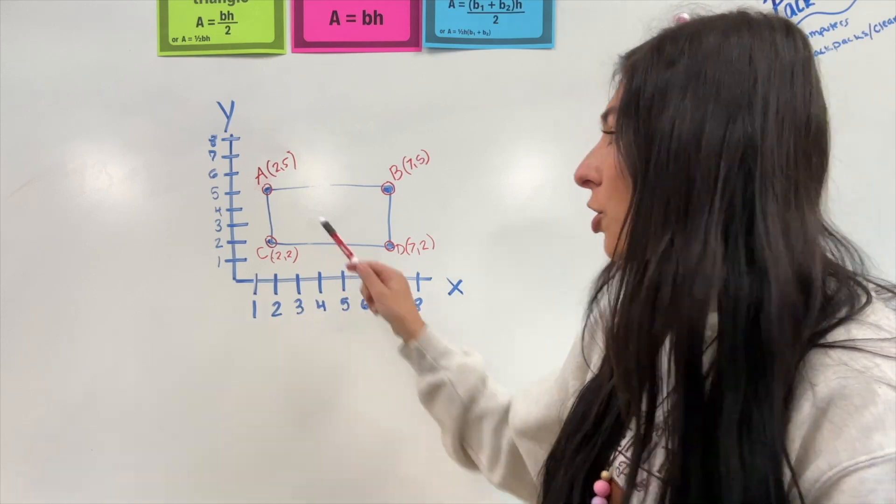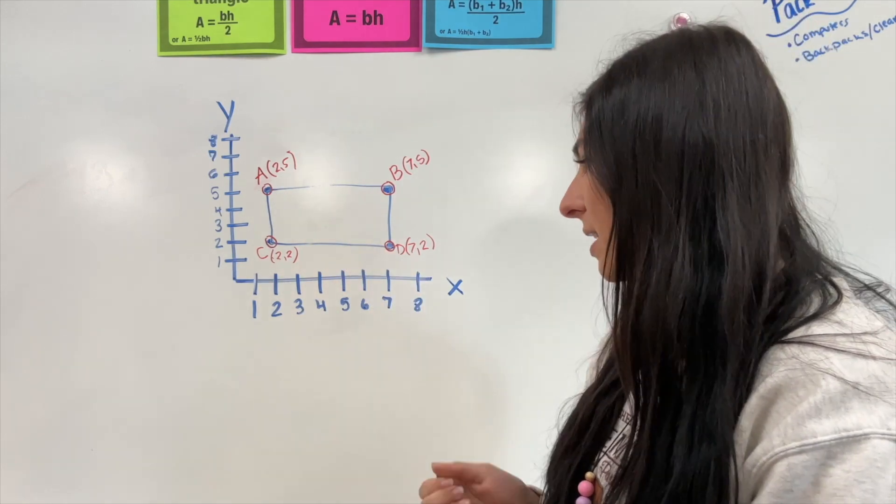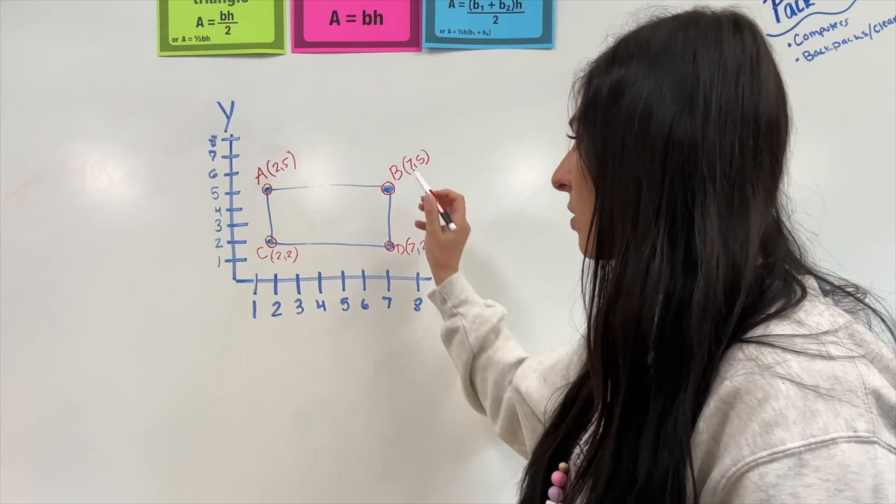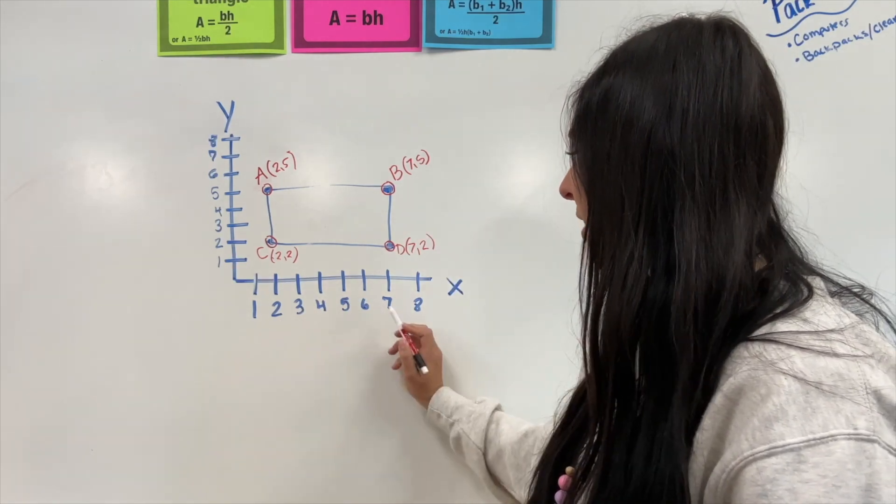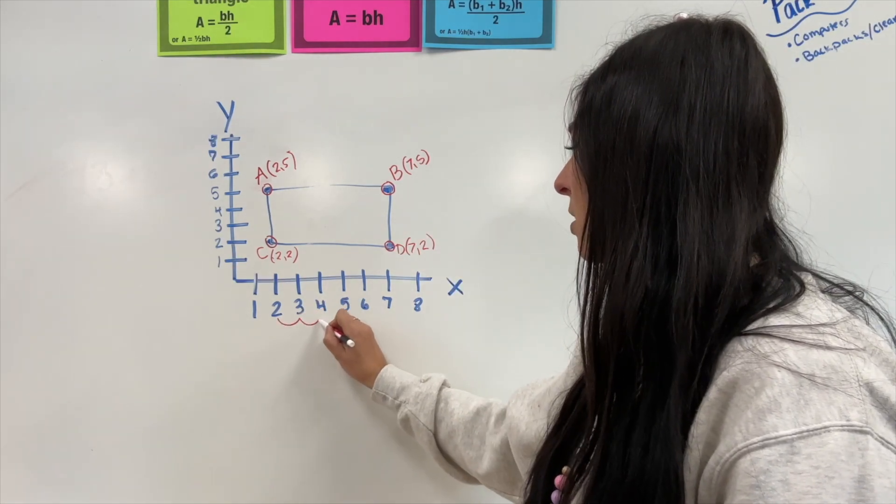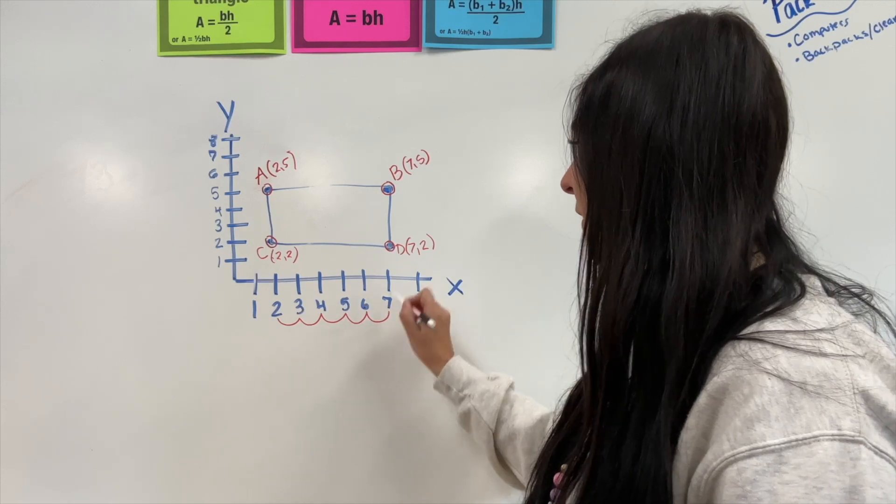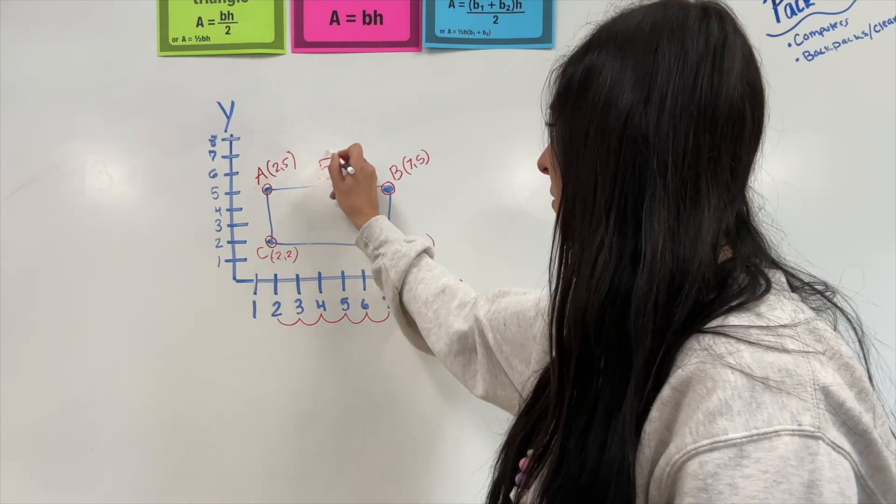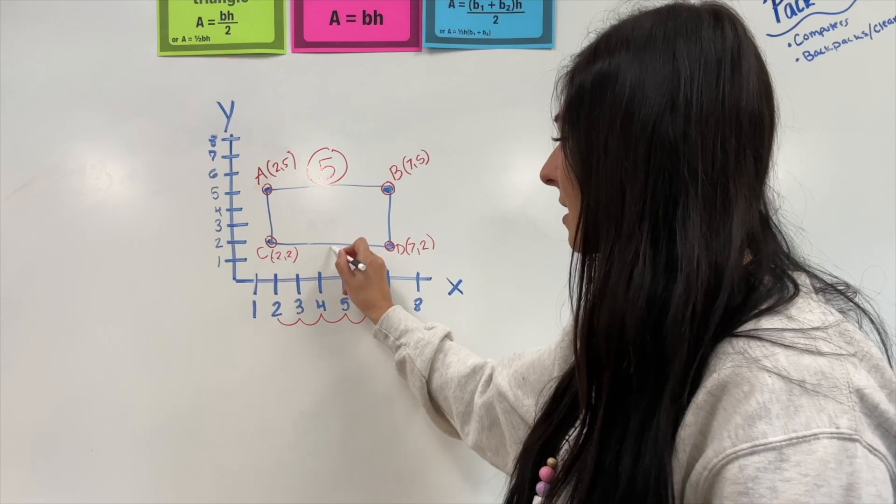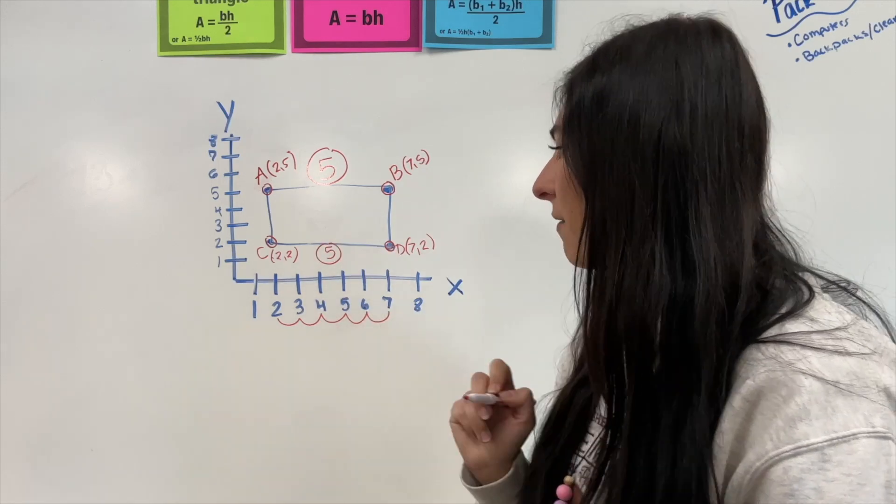So, if you were using graph paper, you could just count how many spaces. Since we don't, I'm going to count spaces this way. So, I see that we are starting at 2 and we are ending at 7. So, I jump 1, 2, 3, 4, 5. That means this goes 5 spaces. Because these match, this one is 5 as well.